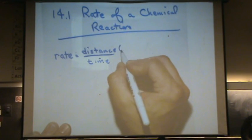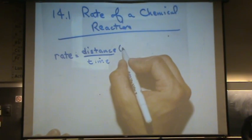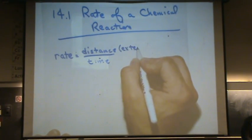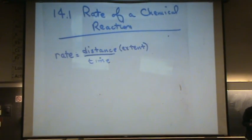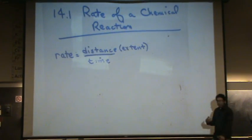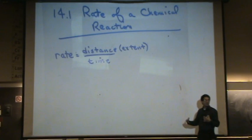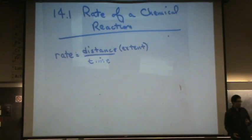So rate is just distance over time. And now if you want to think distance, you can also think of that as extent. If you think of it that way, in your car you're going like 55 miles an hour because you don't want to break the speed limit. The same thing happens in chemistry.